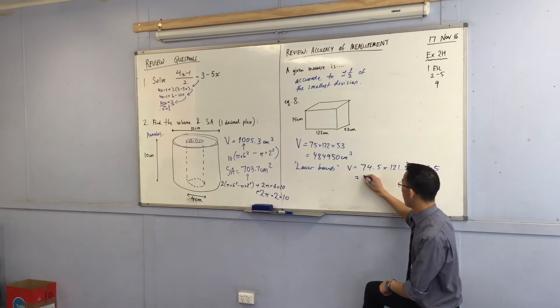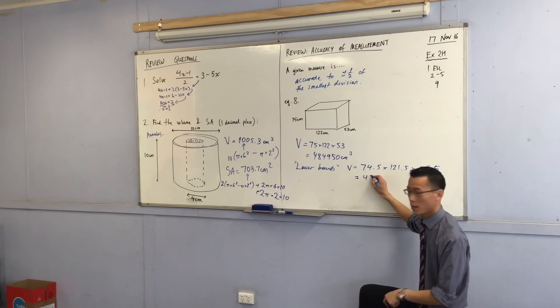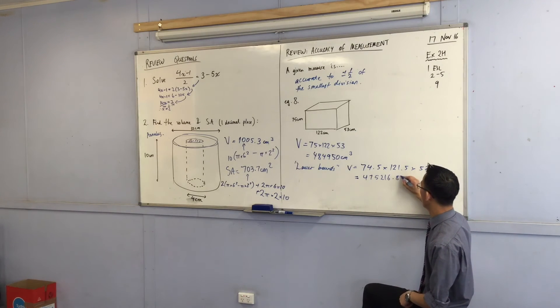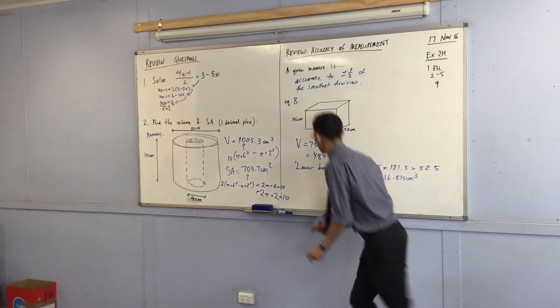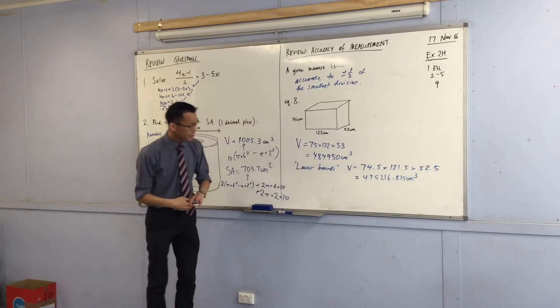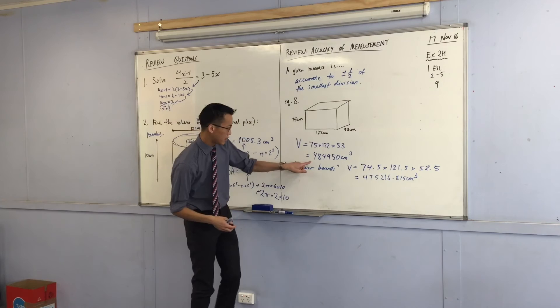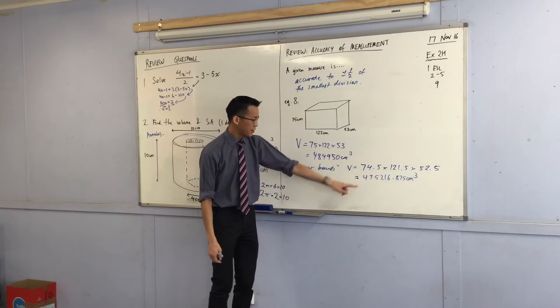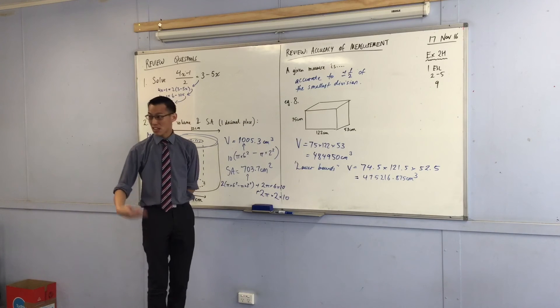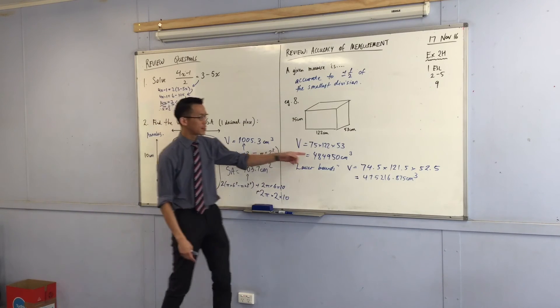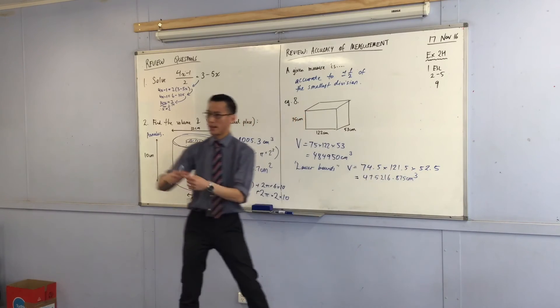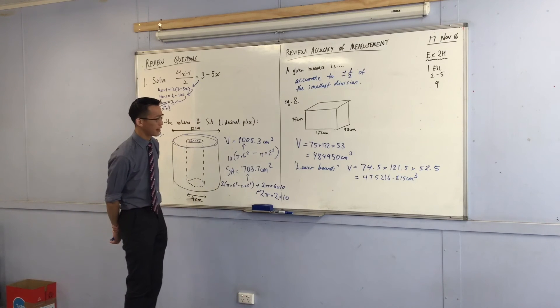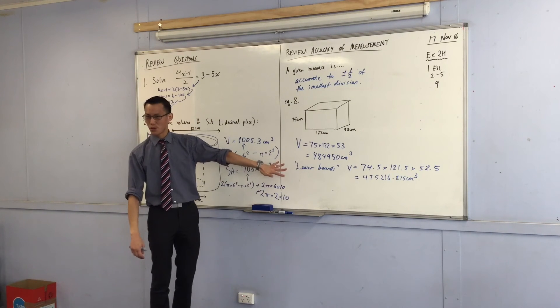475216.875. Now let's have a look. How much of a difference is that? Well, this is 484,000 cubic centimeters. So the difference is like 10,000 cubic centimeters. That's a fair difference, right? And that's because even though there's only a little bit of a difference, we multiply it by itself three times. So it gets bigger and bigger and bigger every time. That's the smallest the volume possibly could be.